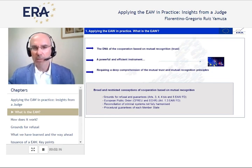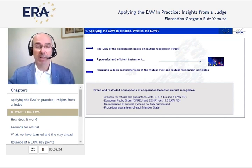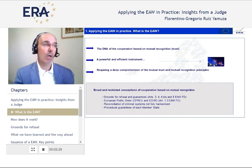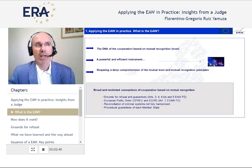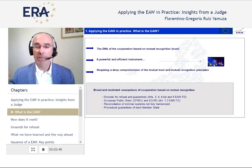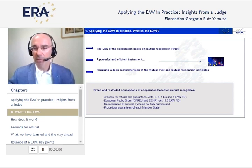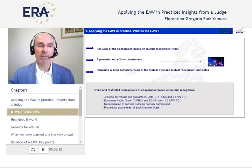On the whole, the order works smoothly and efficiently. This is a very important instrument because it deals with deprivation of liberty — people who are going to be transferred from member state A to member state B, either to stand trial or to serve a sentence. The European Arrest Warrant is also the first order of its kind — all the DNA of mutual cooperation within the area of freedom, security and justice based on mutual trust comes from it. Therefore, any progress we make in relation to the EAW can be applied to the rest of the orders.